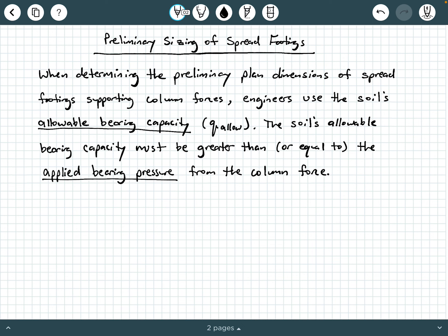When determining the preliminary plan dimensions of a spread footing that's supporting a column force, engineers typically use the soil's allowable bearing capacity, which we often call Q-allow. The soil's allowable bearing capacity must be greater than or equal to the applied bearing pressure from the column force.